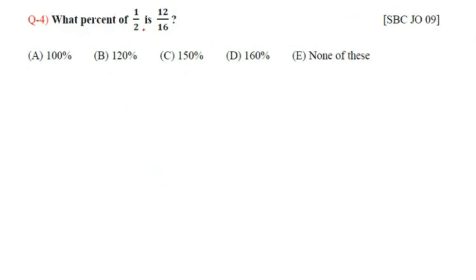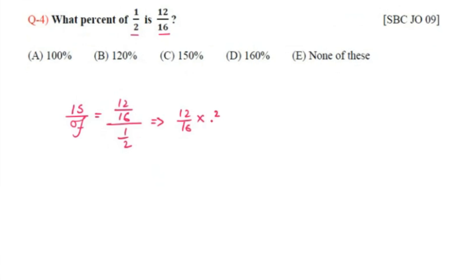Question number 4: What percent of 1/2 is 12/16? Using the 'is/of' rule: (12/16) divided by (1/2), multiplied by 100. Simplifying: (12/16) × (2/1) × 100 = (3/4) × 2 × 100 = 150%. The answer is 150%.